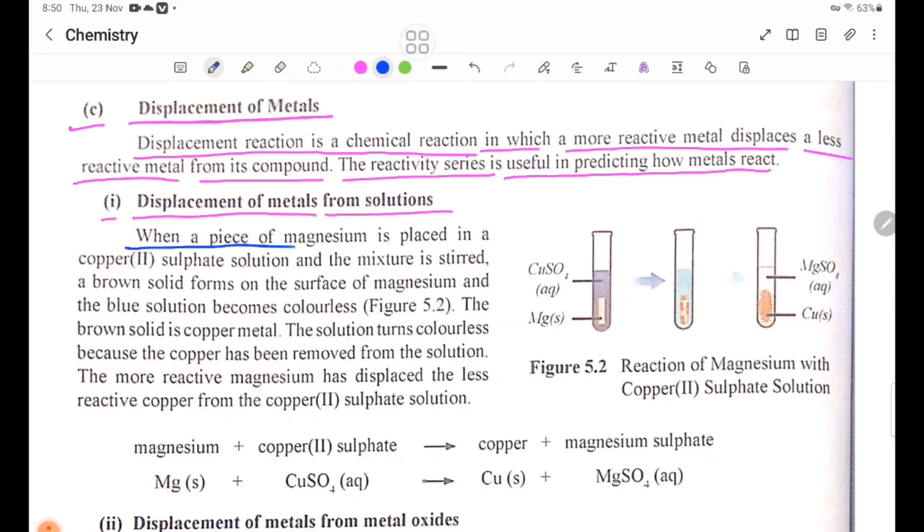When a piece of magnesium is placed in a copper sulfate solution, the mixture is stirred. A brown solid forms on the surface of magnesium, and the blue solution becomes colorless. Figure 5.2. Figure 5.2 is very important.